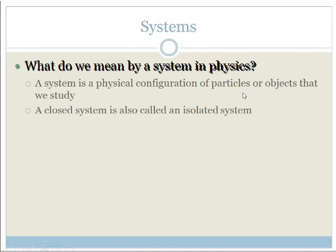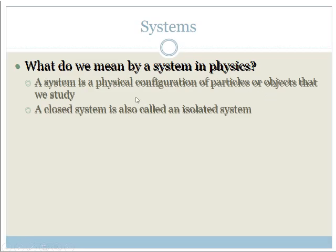It's a physical configuration of particles or objects that we study. A closed system is a very specific type of system and it's called an isolated system. But what is an isolated system?